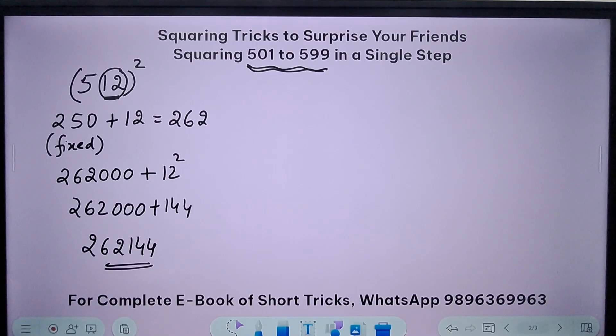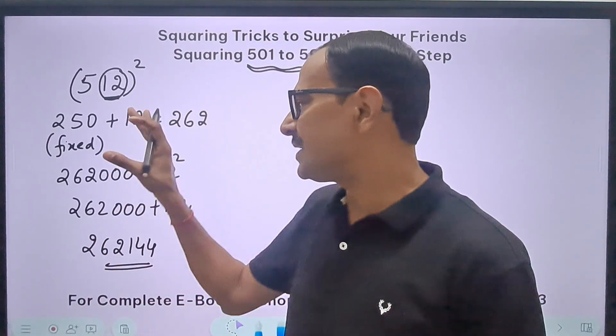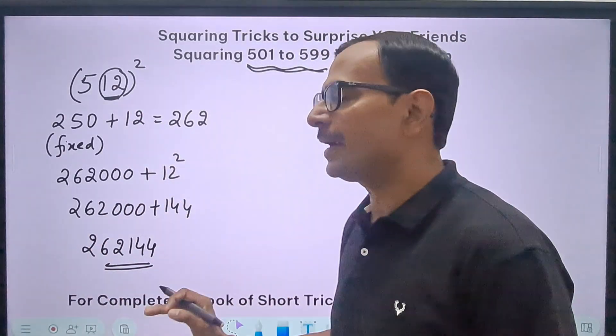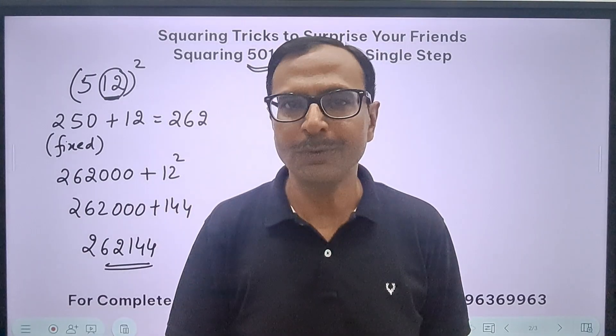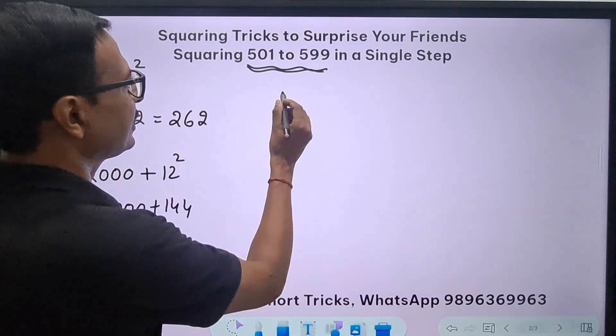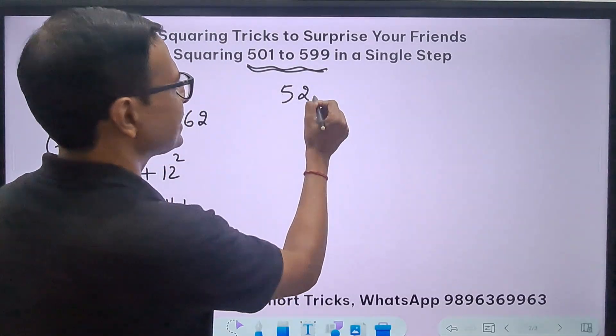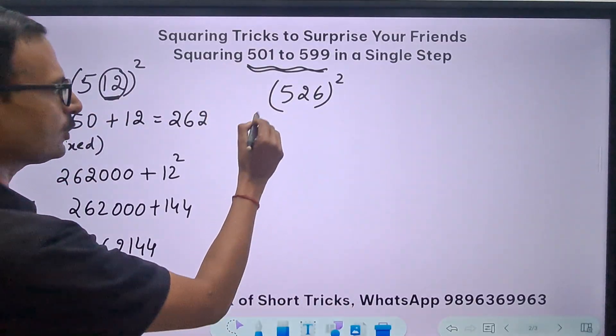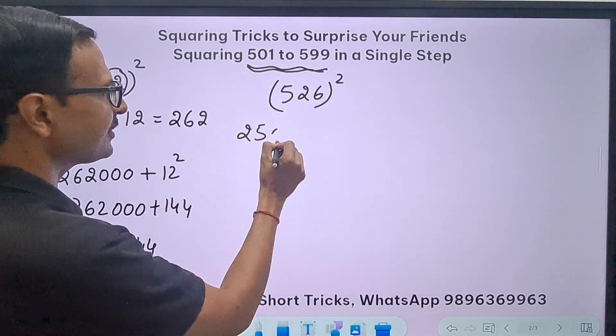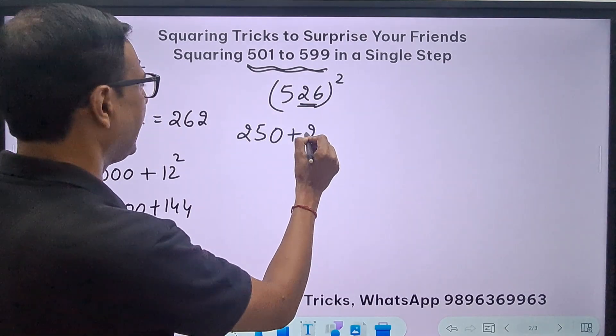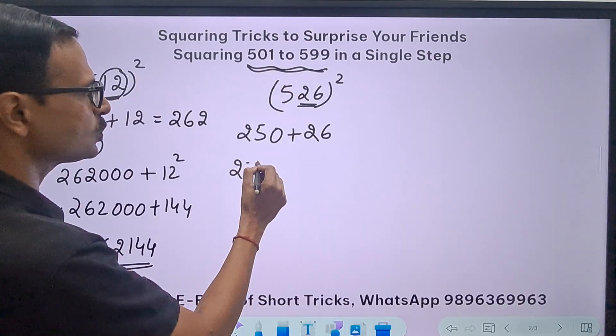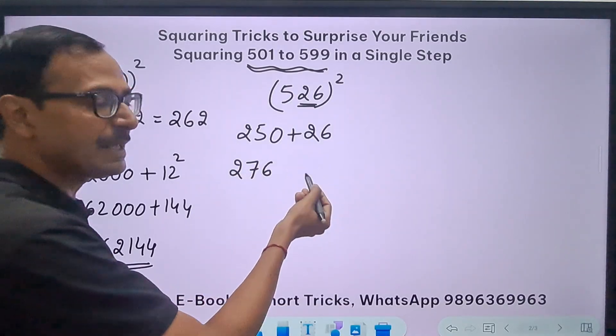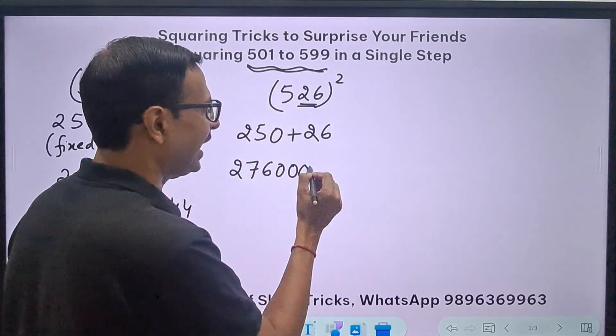So 262 triple 0 plus 144 will give me my answer: 262144, and that is the square of 512. So you can check using the calculators and you will find the answer very accurate. So you have seen like so many steps there, right? So slowly I am going to skip steps now, and when we do the last question you will watch the magic. Let's take another number like 526 and try to find the square of this number.